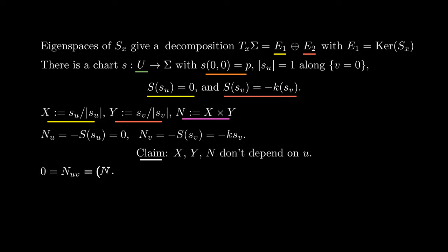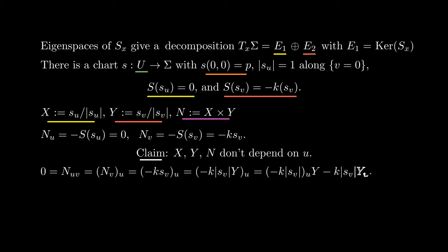We then differentiate this with respect to v and get k times Svu is also zero. From the definition of y, Sv is its norm times y. We then apply the product rule with respect to u. This last expression has a component in the direction of y and a component in the direction of yu. Now remember that the derivative of a unit vector is always perpendicular to the original vector, meaning that yu is perpendicular to y. Therefore, the component corresponding to yu in this expression is zero. From our hypothesis, k doesn't vanish in this neighborhood, and since S is a chart, Sv is also not zero. This implies that yu is zero.